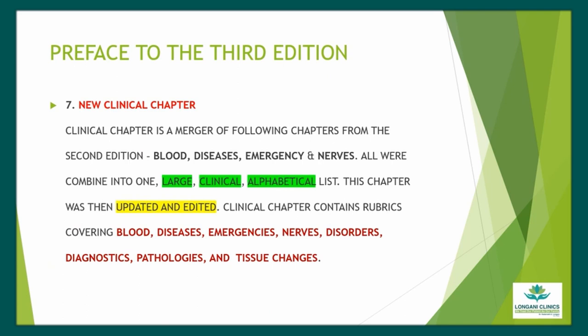The Clinical chapter is a merger of the following chapters from the second edition: Blood, Disease, Emergency, and Nerves — all combined into one large clinical alphabetical list. This chapter was then updated and edited. The Clinical chapter contains rubrics covering blood diseases, emergencies, nerves, disorders, diagnostics, pathologies, and tissue changes.